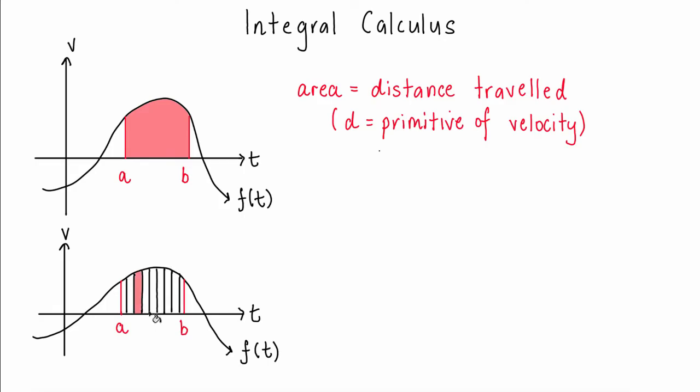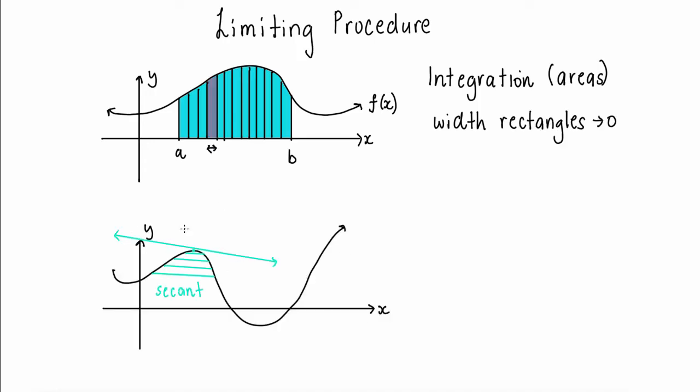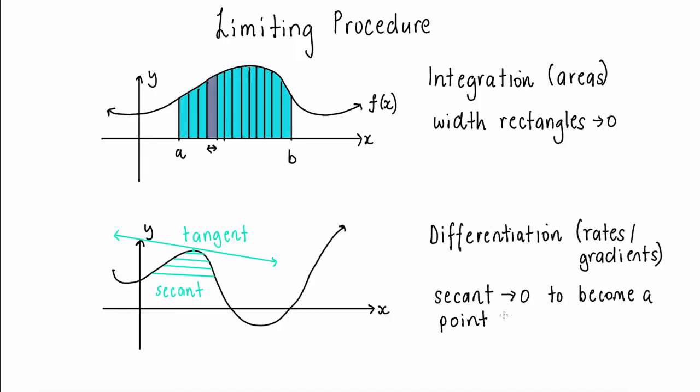The thinner the rectangles are in their width, the more accurate the area under the curve would be, which eventually would approach the exact area. This is known as a limiting procedure, as the width of the rectangles approaches zero, in the same way that the length of the secant approaches zero for differentiation.